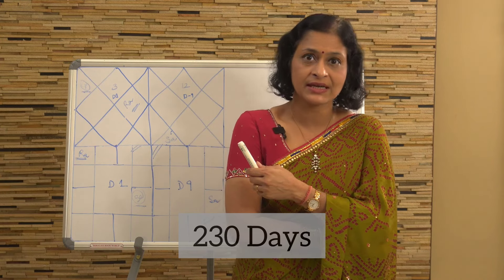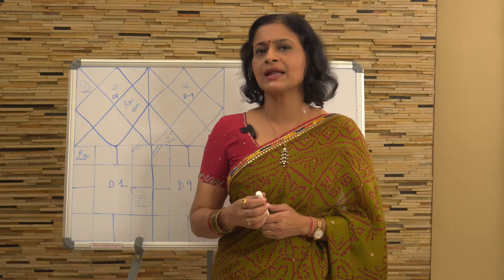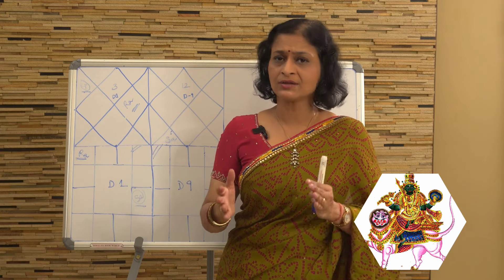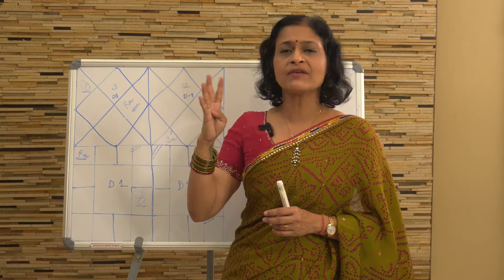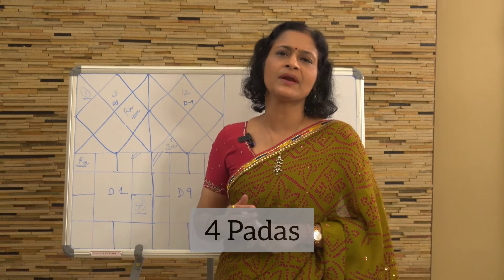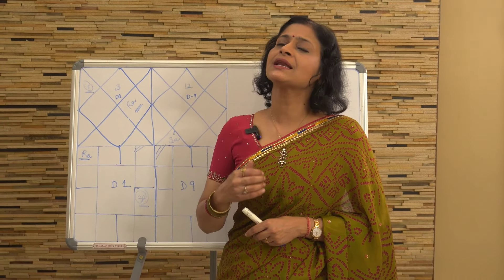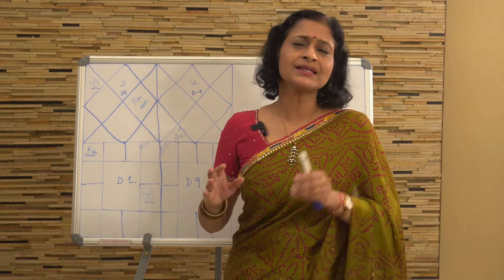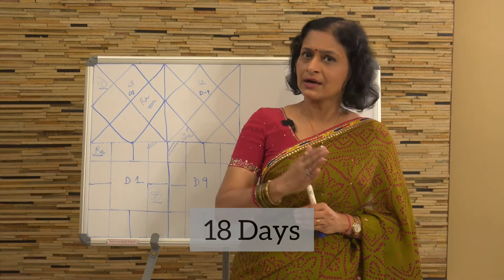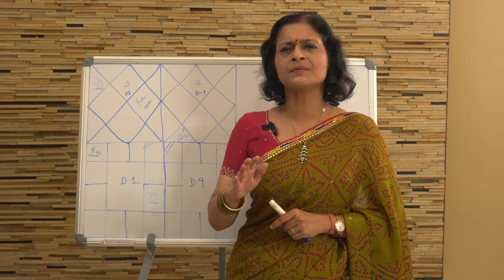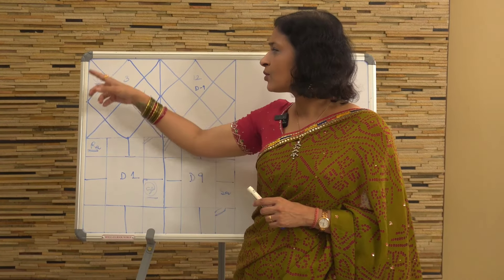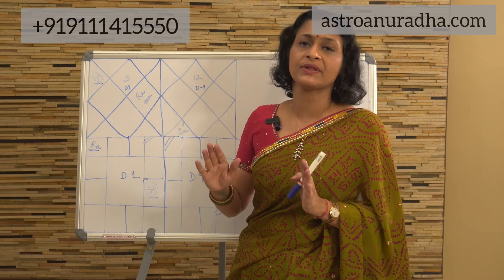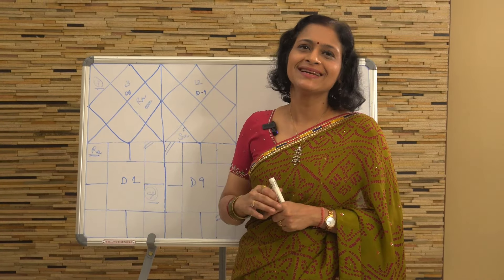You can ask why 230 days. When you roughly calculate the transit of Rahu through a nakshatra, each nakshatra has 4 padas of 3 degrees 20 minutes each, making it 13 degrees 20 minutes total. Rahu takes approximately 18 days to transit through one degree, so it is approximately 230 days that Rahu will be transiting through a nakshatra. Rahu will therefore be transiting through Uttarabhadrapada for approximately 230 days.